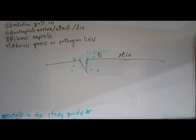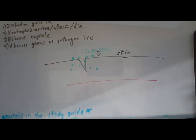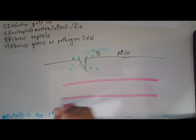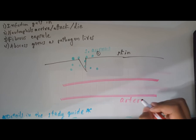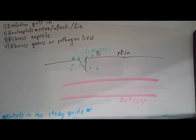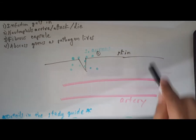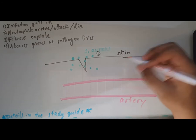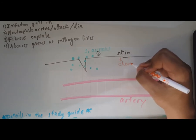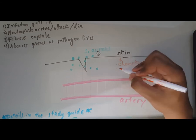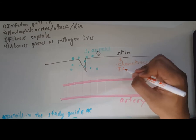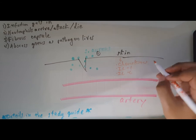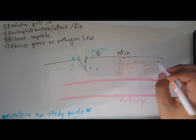Now we have to talk about how the neutrophils get to this site of infection. Here's an artery. The epithelial cells from the skin that got damaged and the endothelial cells from the artery are going to send out signals - they're going to send out chemokines, IL-1, and also IL-6.